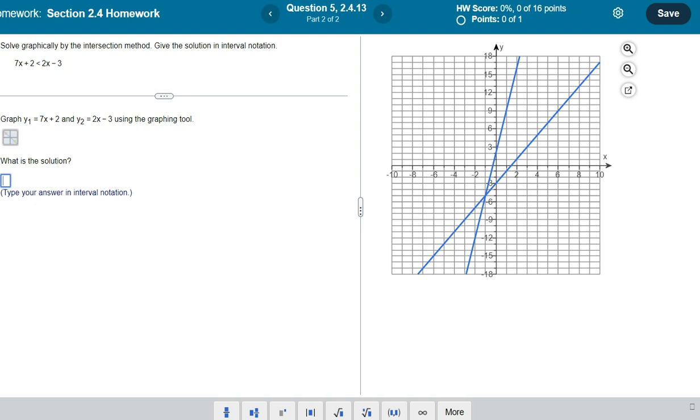The steeper line has the slope of 7, so this is my y sub 1, and this is my y sub 2. So we're looking for where this line is below that line, which would be right here. It'd be to the left of this point, so pretty much over here in quadrant 3.